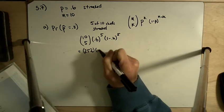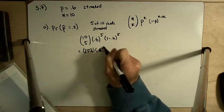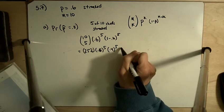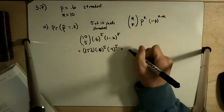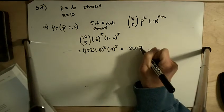We have 10 choose 5 is 252, 0.6 to the 5, 0.4 to the 5. And when you multiply all of this out, you get 0.2007.